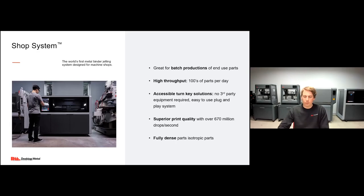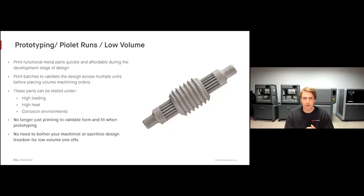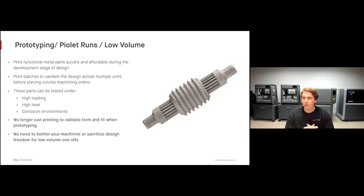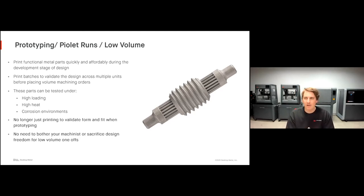Let's start with metal 3D printing as a complement to machining — prototyping, pilot runs, and low volume production. With metal 3D printing, you can print functional metal parts quickly and affordably during the development stage of design. You can print batches to validate the design across multiple units before investing in high volume orders. Unlike plastic 3D printing which validates form and fit, we can actually test how parts perform under high loading, high heat, and corrosive environments — functional prototyping. For low volume or one-off parts, we don't need to sacrifice our designs; we can simply print the part, install it, and we're ready to go.